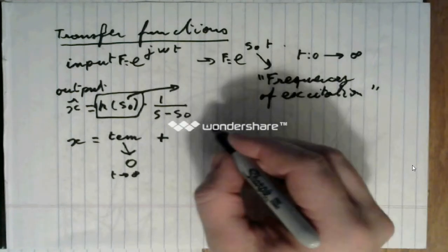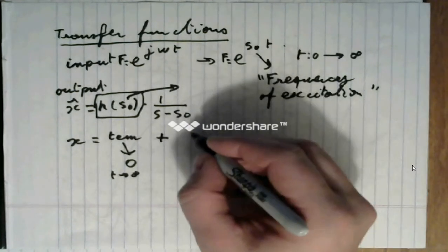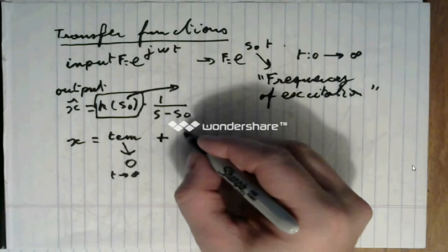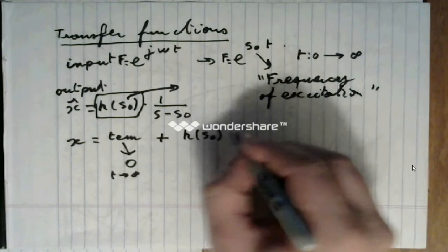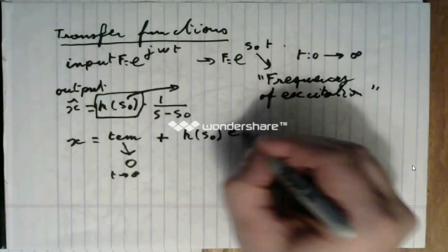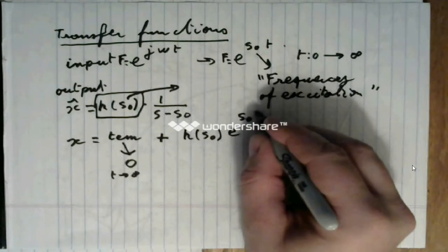Plus a steady state term, which will be of the kind h of s zero, e to the s zero times t.